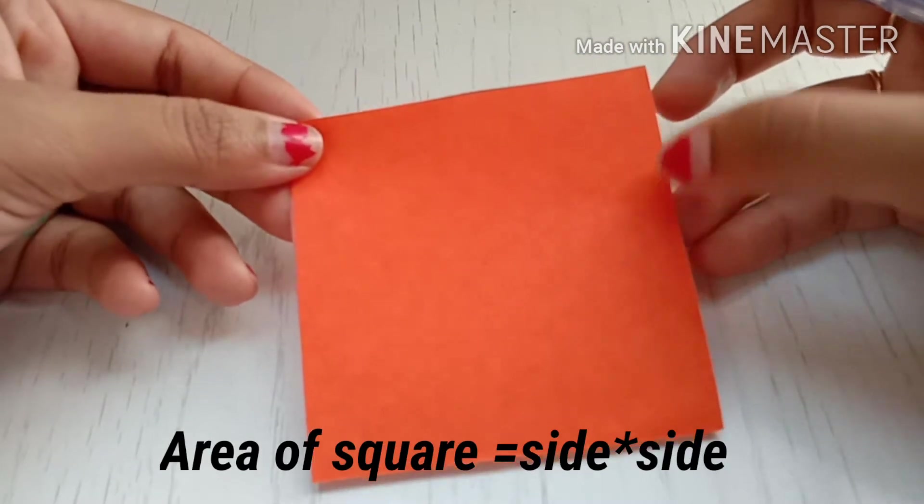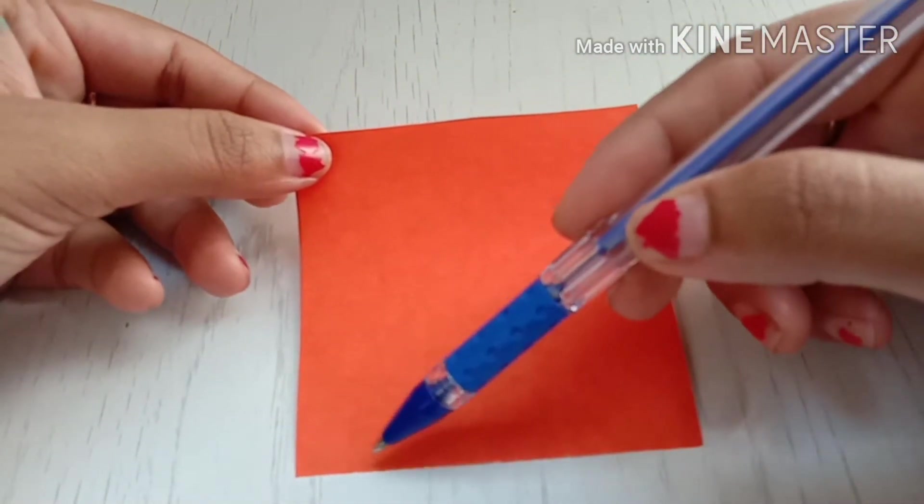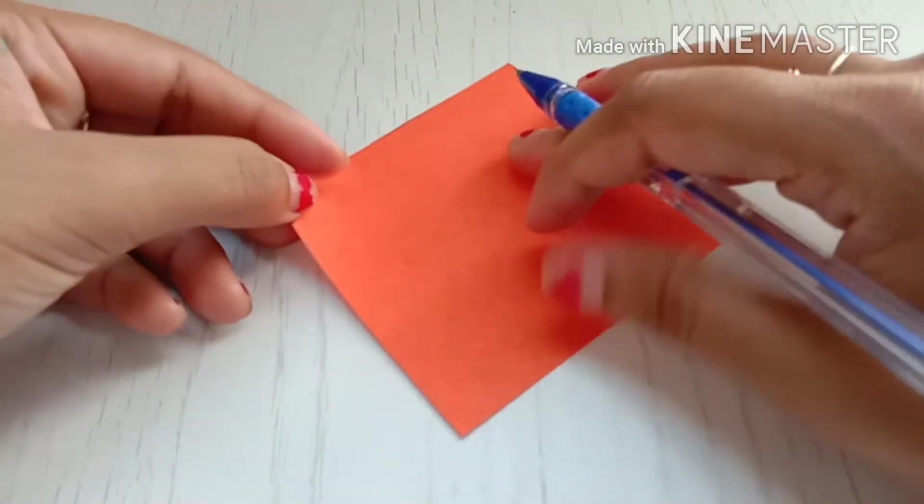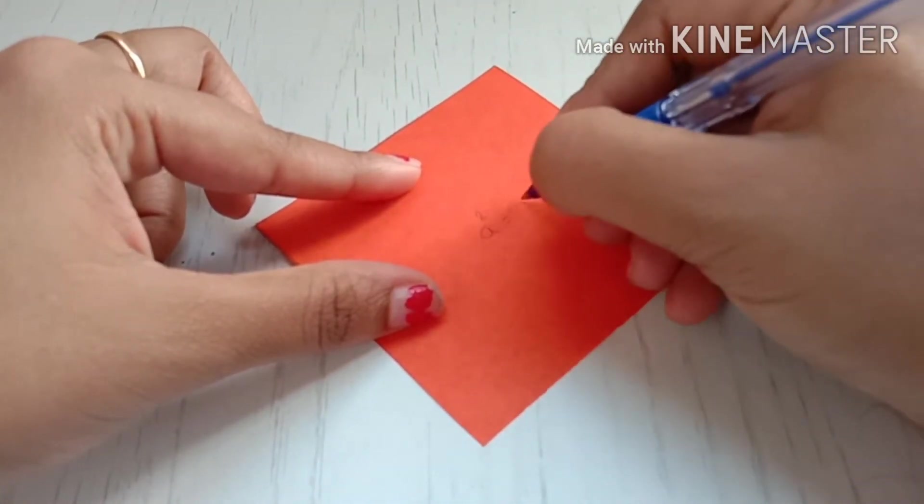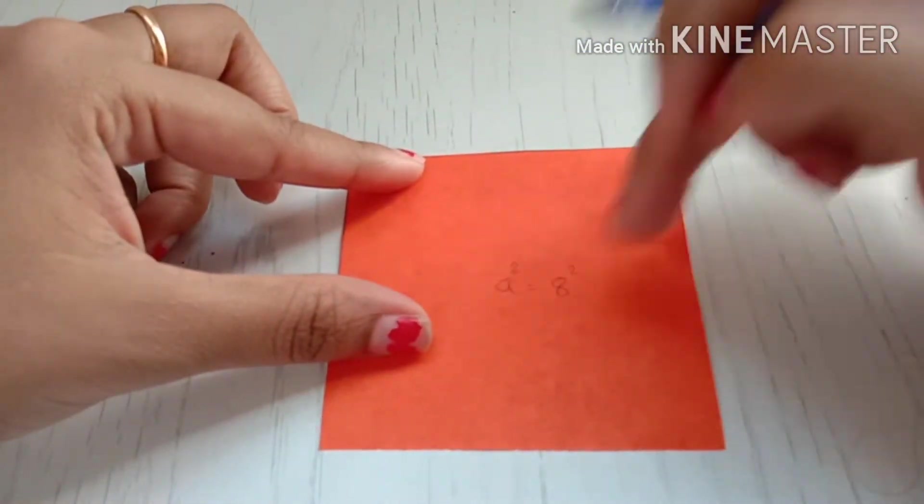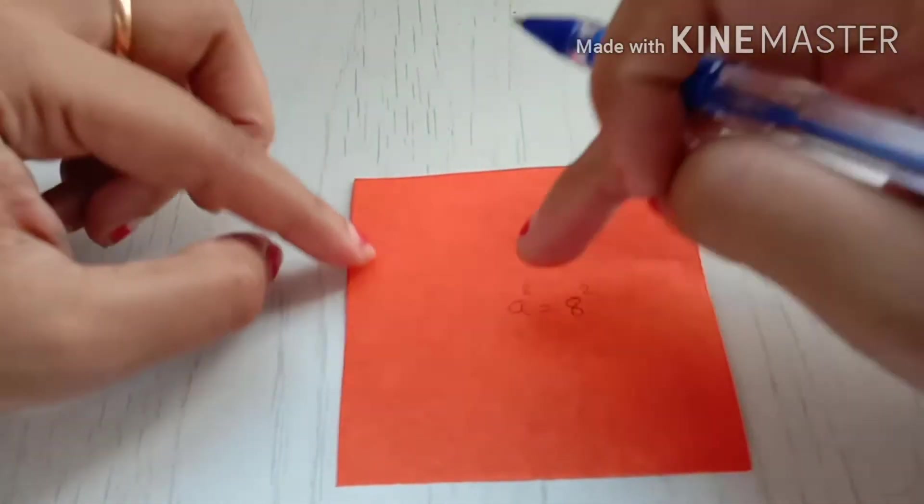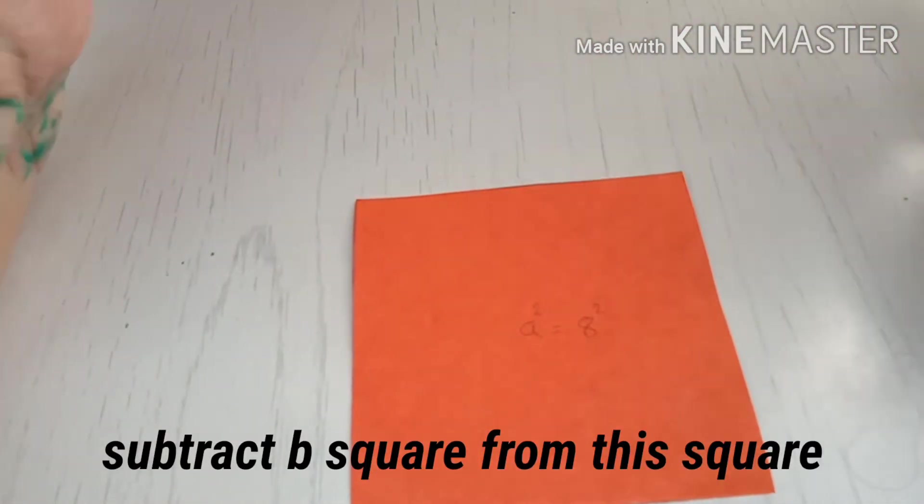That is side square. So here, since the side is 8 centimeters, my a square will be 8 square. This is a square. Now from this a square sheet, I am going to subtract b square.